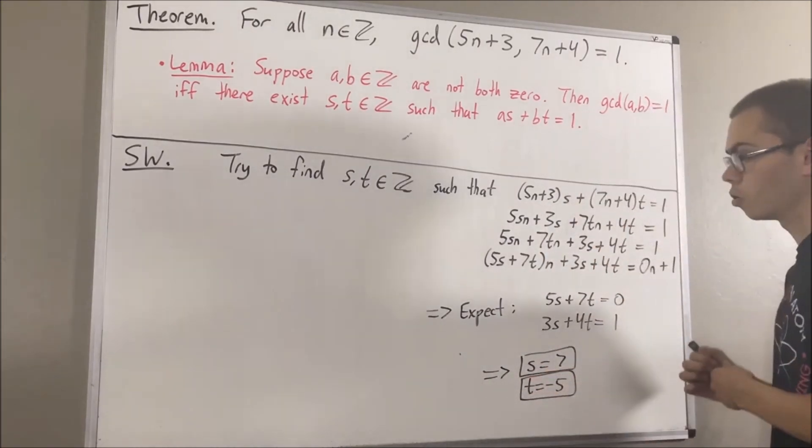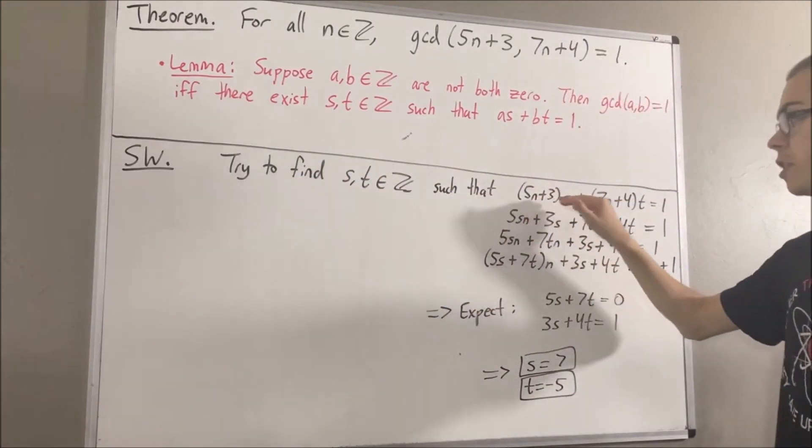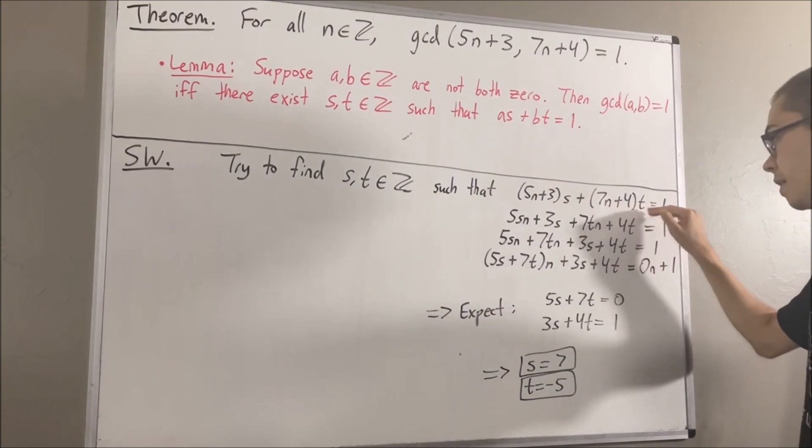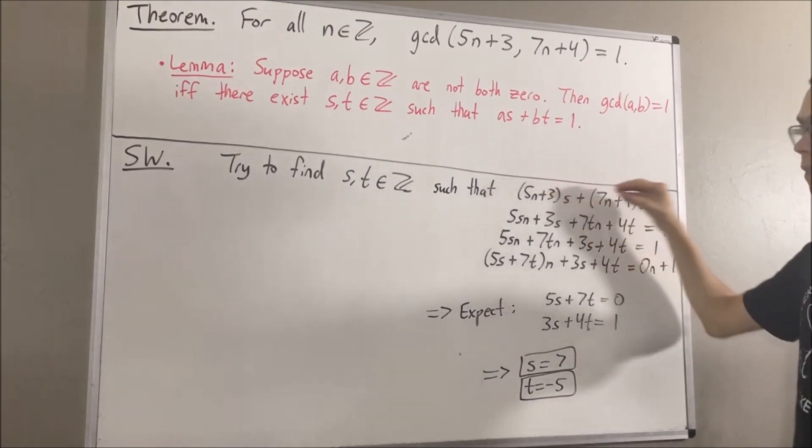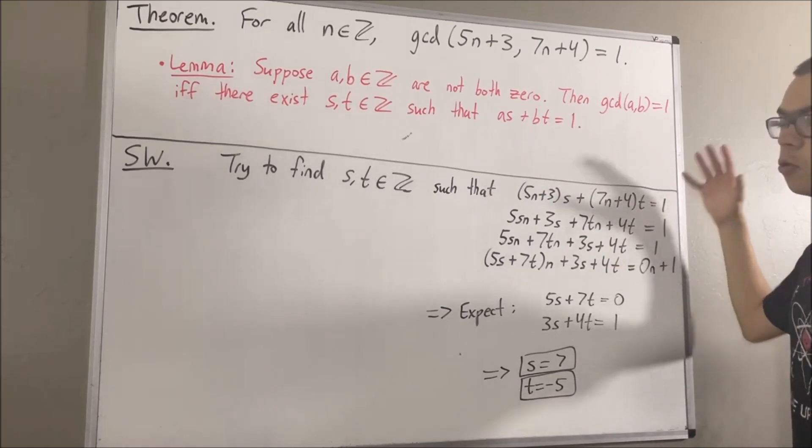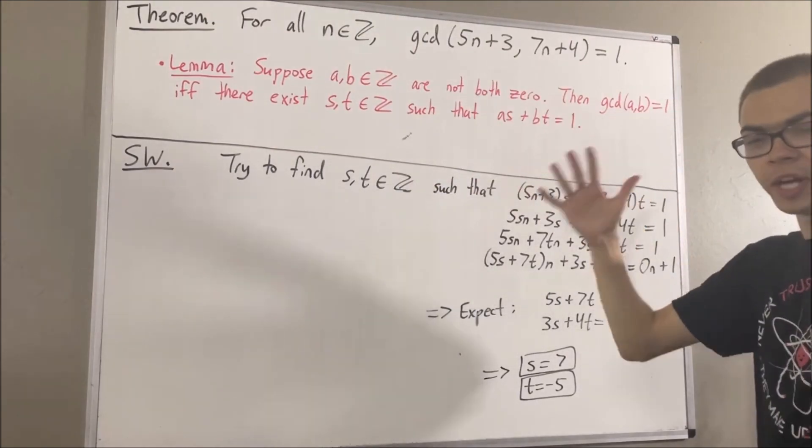So, our goal was to find integers s and t such that 5n plus 3 times s plus 7n plus 4 times t equals 1. Well, these values for s and t will make that work. And so, we should now be able to prove the theorem. So, let's get into writing up the proof.